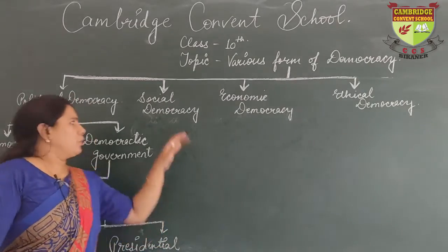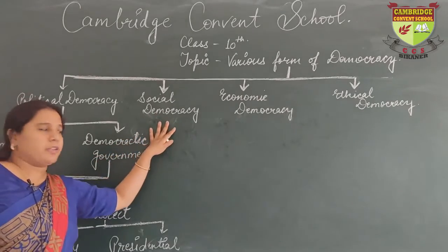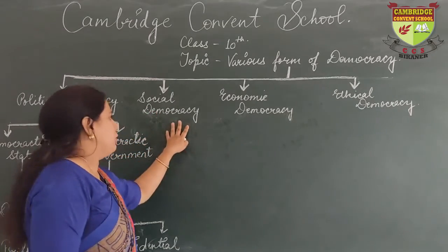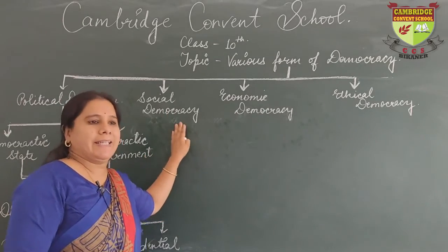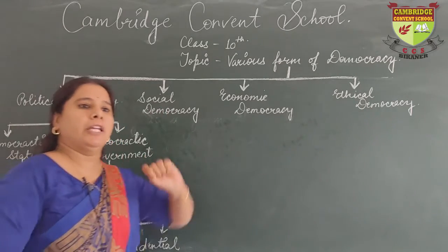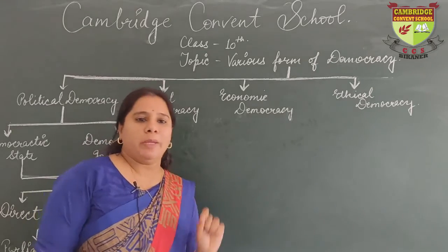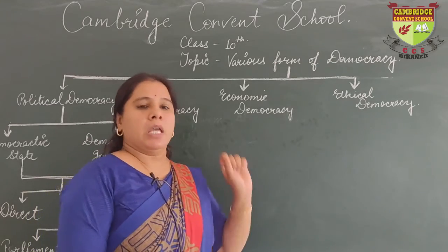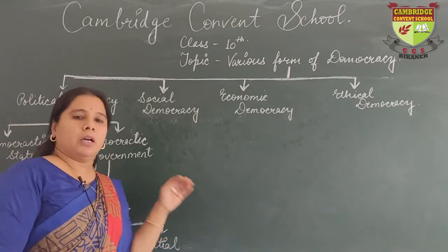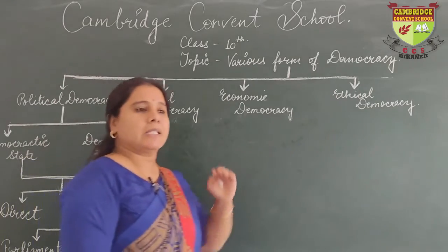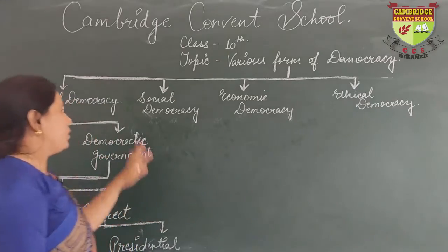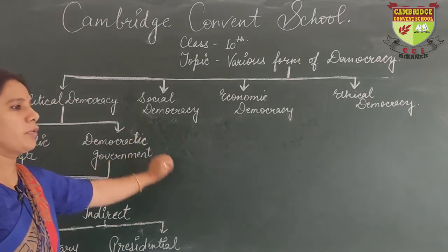Now let us come to social democracy. Social democracy is that form of democracy which believes in equality in society. It says that every individual in society is equally important and there should not be any privileged class. There should be no discrimination based on color, caste, creed, place of birth, or wealth. So this is what social democracy is.